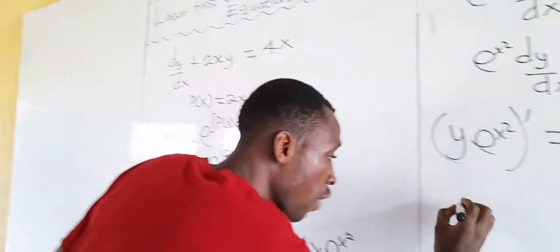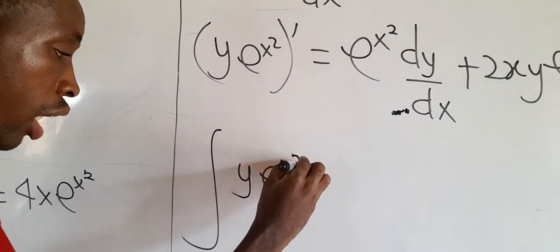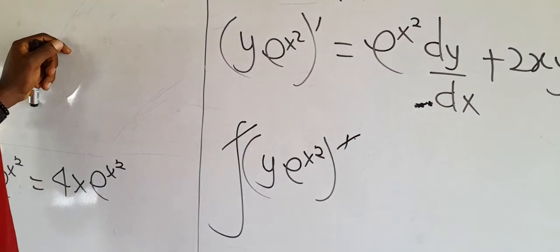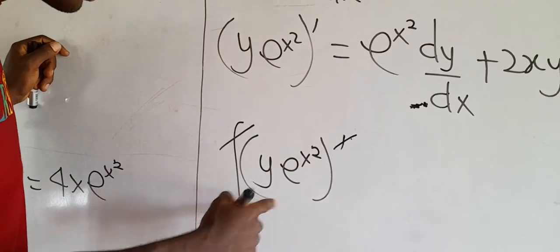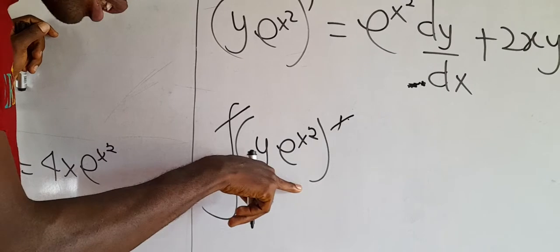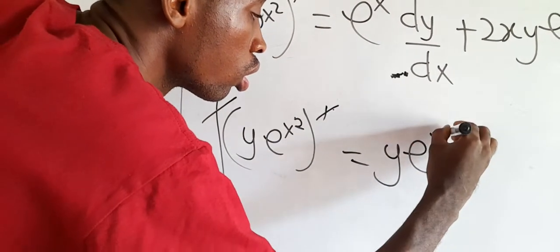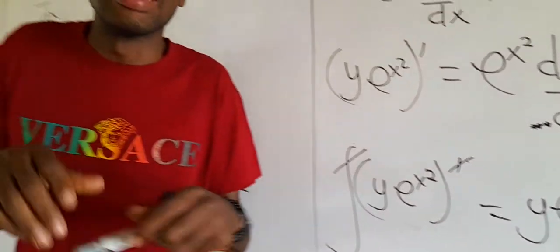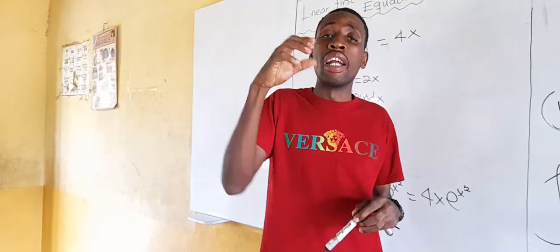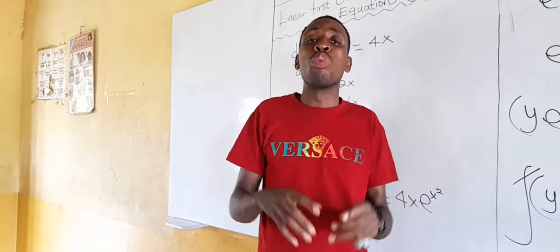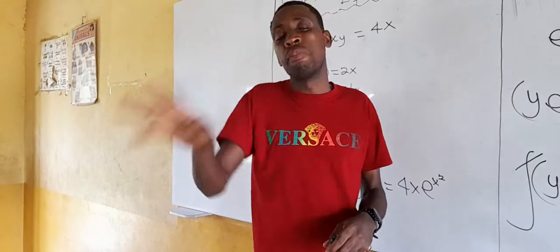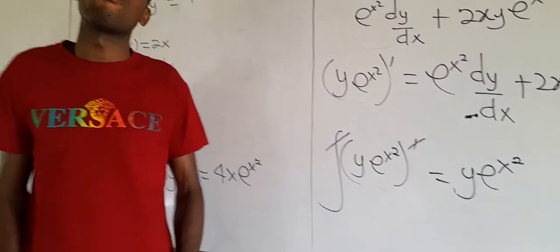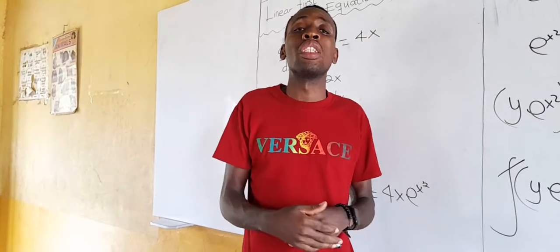The next thing: if I integrate the differential of y·e^(x²), the integral will undo the differential — so the answer is just y·e^(x²). Any time you integrate the differentiation of a function, the answer is nothing but the function itself. With these rules, we will have no problem solving linear first order ordinary differential equations. Let's take a sample question.